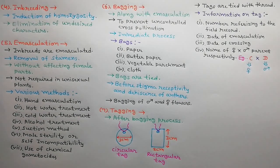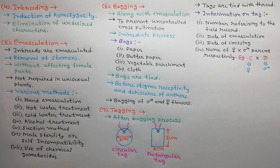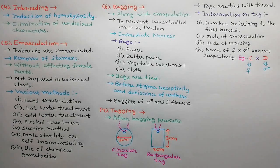Number referencing to the field record, date of emasculation, date of crossing, name of female parent written first followed by a cross sign (×) and the name of male parent. For example, C × D denotes that C is female parent and D is male parent.